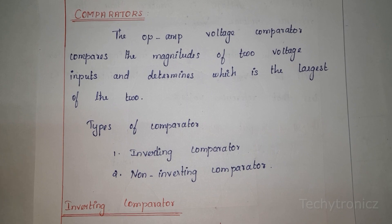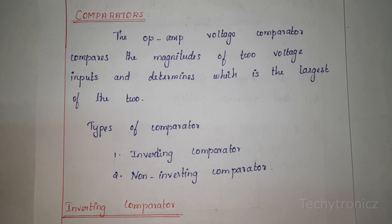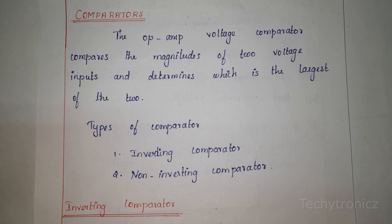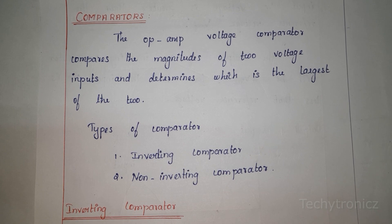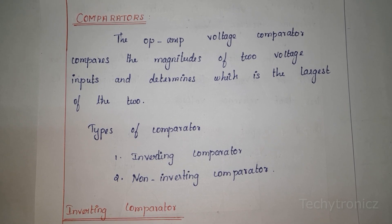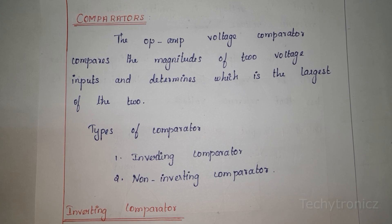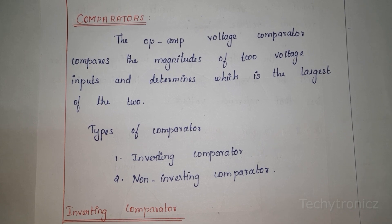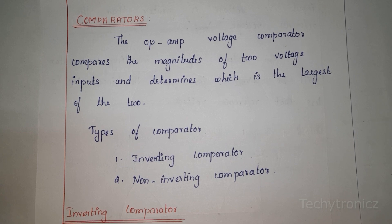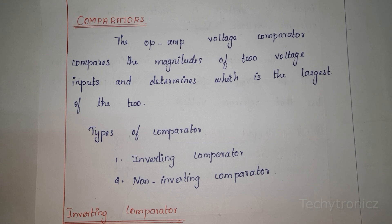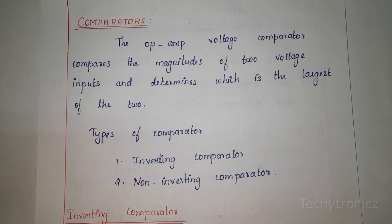The op-amp comparator compares one analog voltage level with another analog voltage level. This other analog voltage level represents a reference voltage. That means we are going to compare one input voltage with one reference voltage, and it produces an output signal based on this voltage comparison. The op-amp voltage comparator compares the magnitude of two voltage inputs and determines which is the largest of the two.